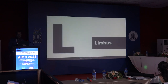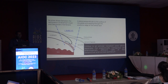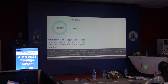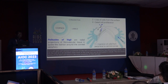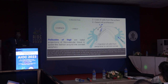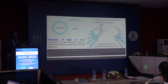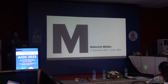L for limbus. The palisades of Vogt are radial projections at the limbus. You should remember the XYZ hypothesis proposed by Thoft and Friend: the X component denotes basal cell proliferation, Y component shows migration of cells from the periphery to the central cornea, and Z component denotes loss of cells from the surface.